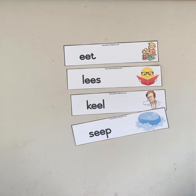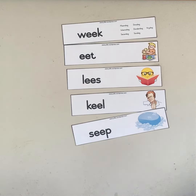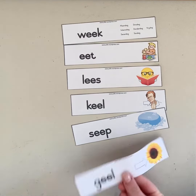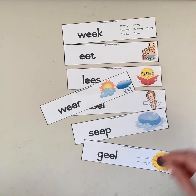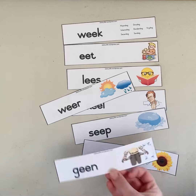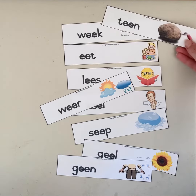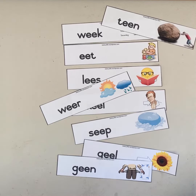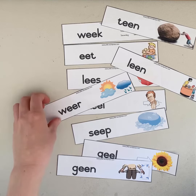Seep, which is soap; swak, which is weak; geel, which is yellow; weer, which is weather; leeg, which is nothing or empty; neen, which is next to; leen, which is loan or borrow.